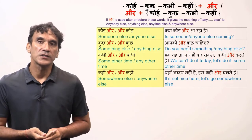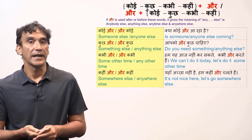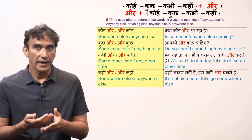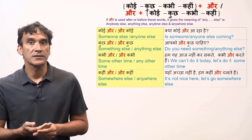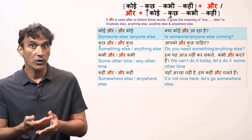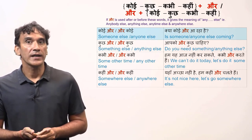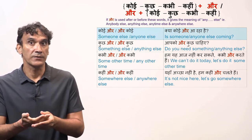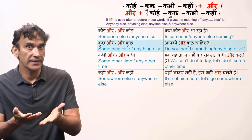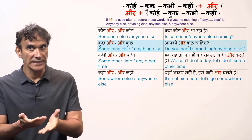If the word aur is used after or before these words, it gives the meaning of else — someone else or anyone else, something else or anything else, some other time or any other time, somewhere else or anywhere else. Koi aur or aur koi means someone else or anyone else. Kya koi aur a raha hai? — Is someone else coming? Is anyone else coming? Kuch aur or aur kuch means something else or anything else. Aap ko aur kuch chahiye? — Do you need something else? Do you need anything else?